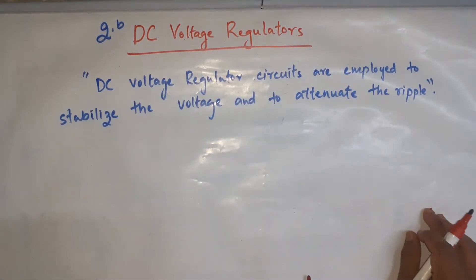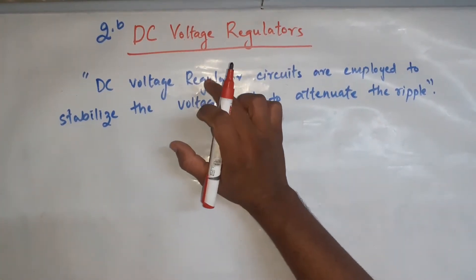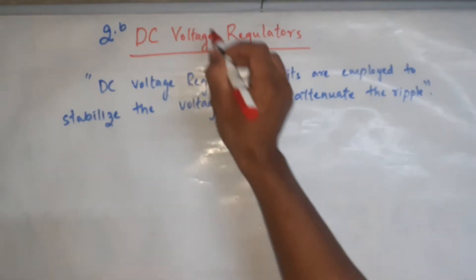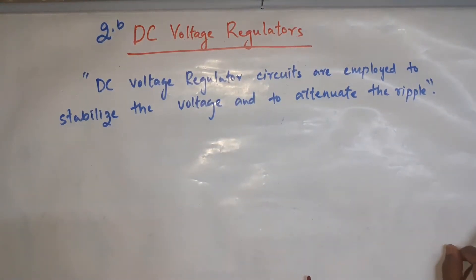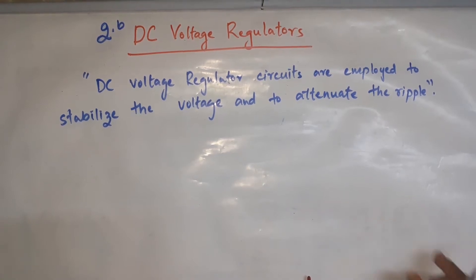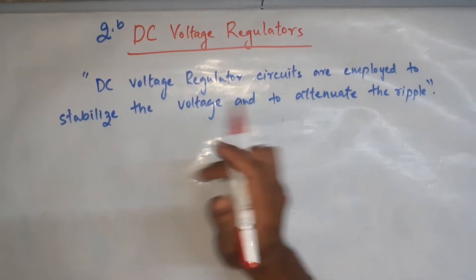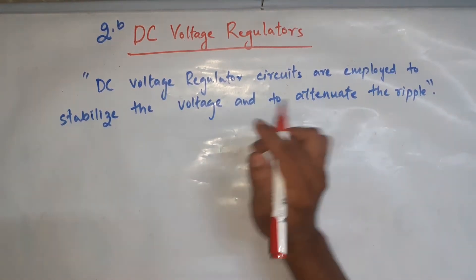When we require to supply a particular load with a voltage, that voltage should be stable — a lot of variation should not be present while it is being supplied to a load. To minimize the variations we require a regulator, which keeps on maintaining a constant or specified voltage. DC voltage regulator circuits are employed to stabilize the voltage and to attenuate the ripple.